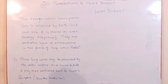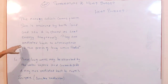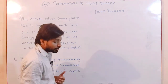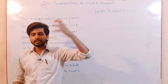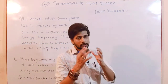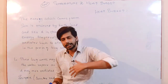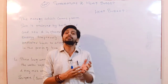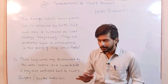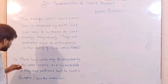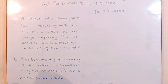The energy which comes from the Sun is received by both land and sea and is stored as heat energy temporarily. Then they are radiated back to the atmosphere in the form of long wave radiations. As we studied before, the radiations from the Sun are short wave radiations, and those from the Earth — terrestrial radiations — going towards the atmosphere are long wave radiations. These long waves may be absorbed by water vapor and carbon dioxide and radiated back to the Earth's surface as counter radiation.